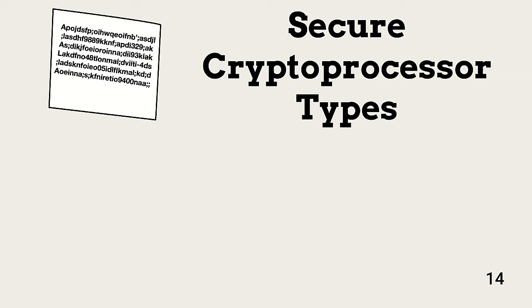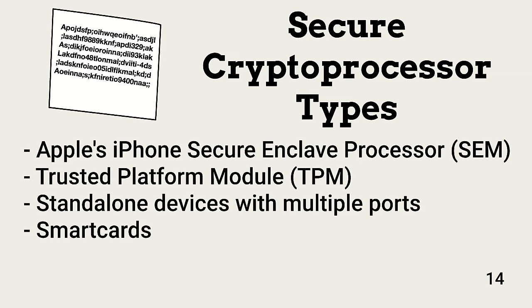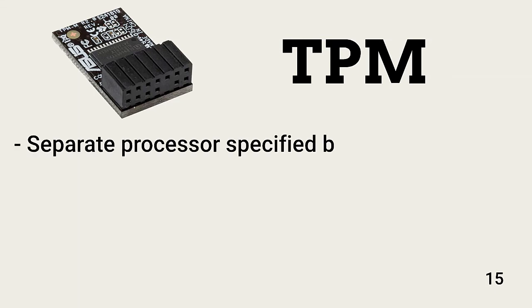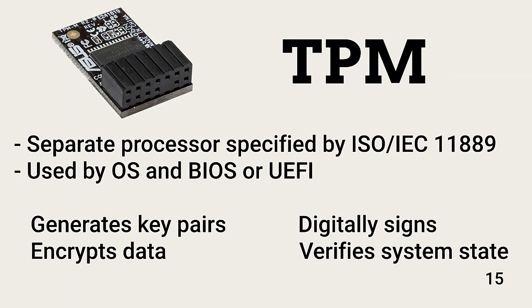Four popular types of secure cryptoprocessors include Apple's SEM, the open-standard TPM, stand-alone devices, and smart cards. The Trusted Platform Module, or TPM, is an ISO 11889 standard used by operating systems, BIOS, and UEFI to perform essential security services. TPMs generate public-private key pairs, securely storing the private key internally in tamper-proof storage. They also use the stored private key for digital signatures, can encrypt data in a way that only the same TPM can decrypt, and support secure boot-up processes that use signatures or other data stored in the TPM to verify the authenticity of drivers, OS modules, and other elements during boot-up.